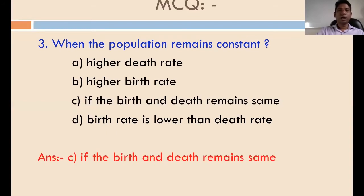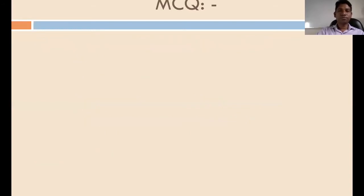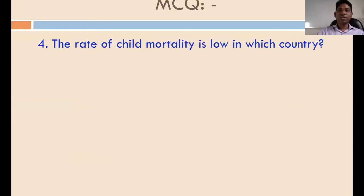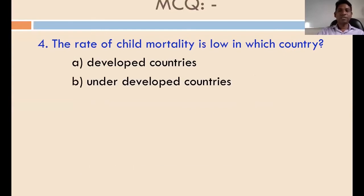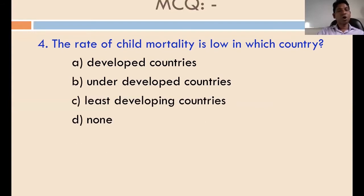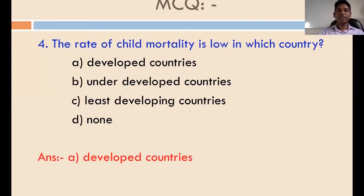Question number four: in which country is the rate of child mortality low? The options are developed countries, underdeveloped countries, less developing countries, and none. The answer is developed countries. Thank you very much.